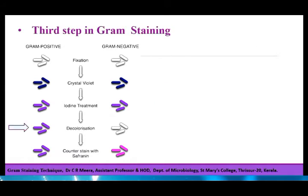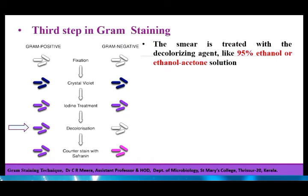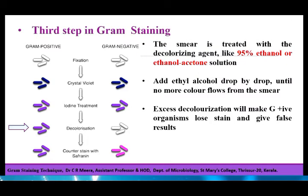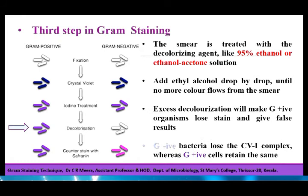In the third step, the smear is treated with the decolorizing agent like 95% ethanol or ethanol-acetone solution. This is the actual differentiating step in the Gram staining procedure. Decolorization is done by adding ethanol or ethanol-acetone solution drop by drop until no more color flows from the smear. Excess decolorization will cause Gram positive organisms to lose the stain and give false results. During decolorization, Gram negative bacteria lose the crystal violet-iodine complex whereas Gram positive cells retain it.